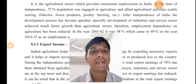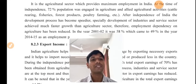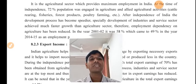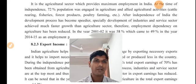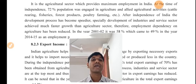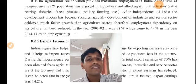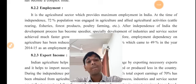Agriculture is the sector which provides maximum employment in India. At the time of independence, 72% of the population was engaged in agriculture and allied activities such as cattle rearing, fisheries, forest products, and poultry farming. After independence, with speedier development of industries and the service sector, employment dependency on agriculture has been reduced. In 2001 it was 58%, which came down to 49% in 2014-15.